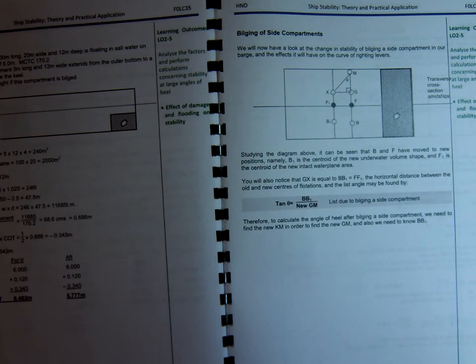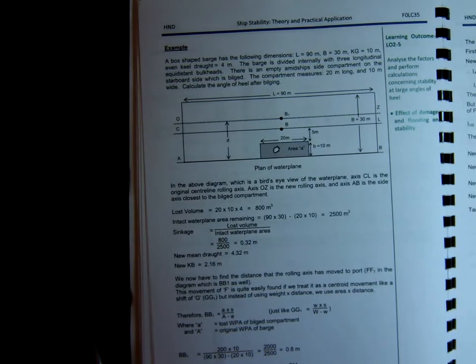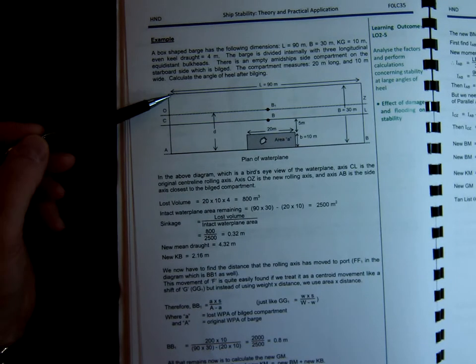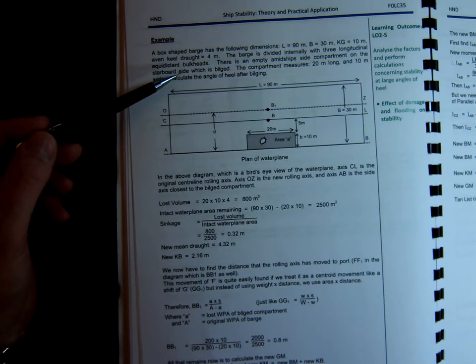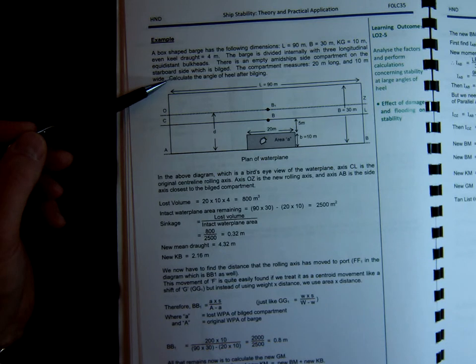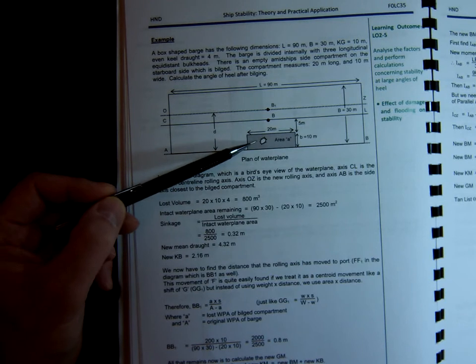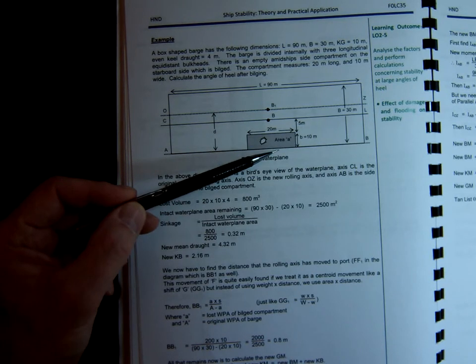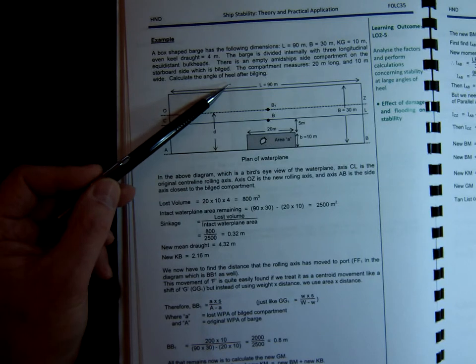To find those, we can calculate the angle of list due to bilging. So we'll look at the example given here. Our vessel's 90 meters long, 30 wide, KG 10, even keel of 4 meters. And there's an empty midships side compartment on the starboard side which is bilged. So this is bilged here, and it's 20 meters long and 10 meters wide. We need to calculate the angle of heel after bilging.